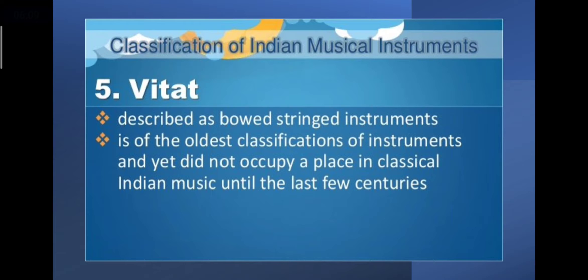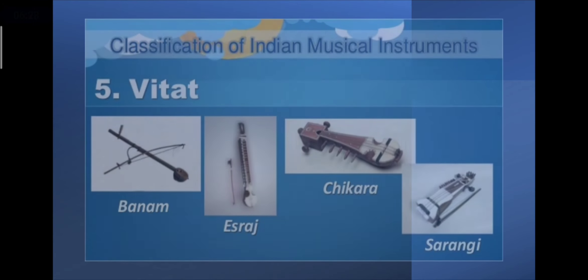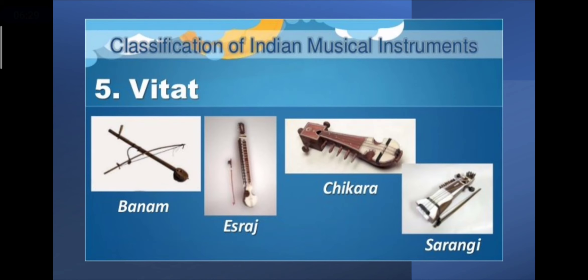The last classification of Indian musical instruments is Vitata — it is described as bowed string instruments. It is the oldest classification of instruments and yet did not occupy a place in classical Indian music until the last few centuries. Here are some examples of Vitata instruments.